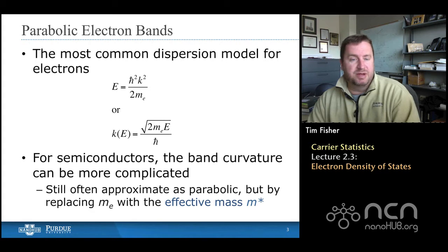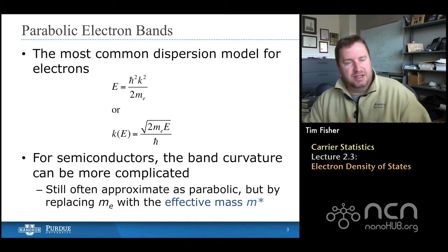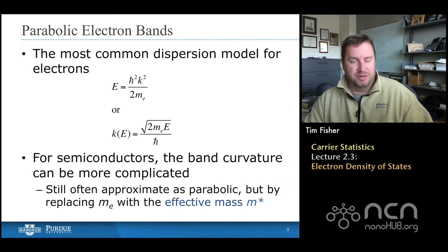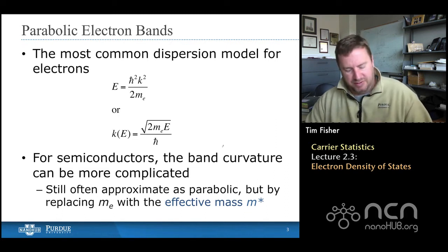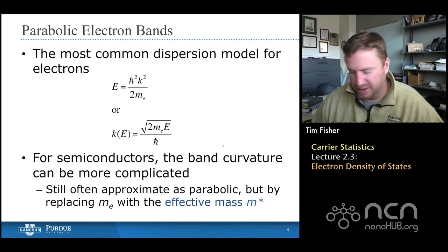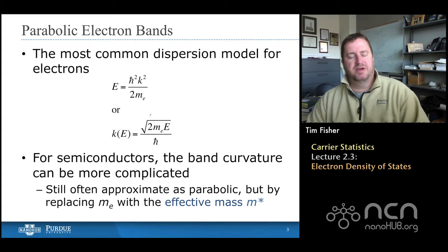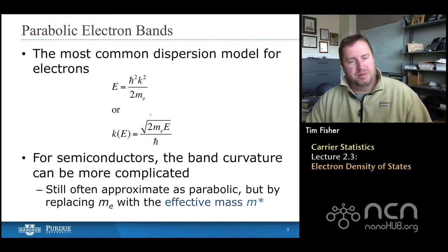The most common dispersion approximation for electrons is the so-called parabolic band approximation. And so here we have essentially the energy is proportional to the momentum squared. And if you actually back out momentum and express it instead of in the quantum sense of h-bar times K, if we express that as mass times velocity, you'll notice that this looks like the kinetic energy equation, E equals one-half mv squared. And so that's what we will use for our general approximations for electron dispersion.